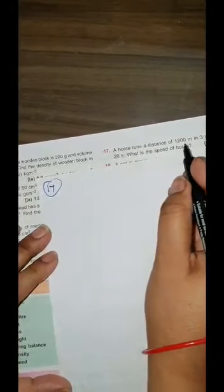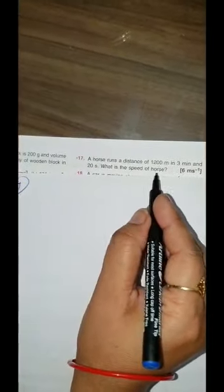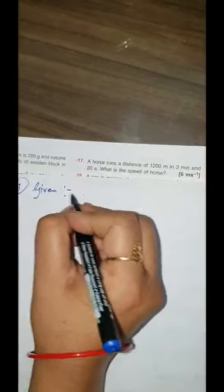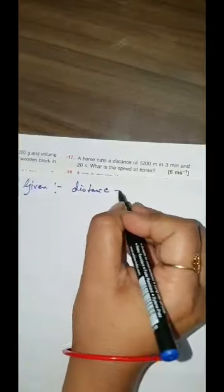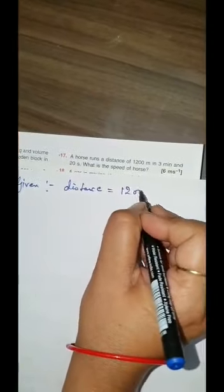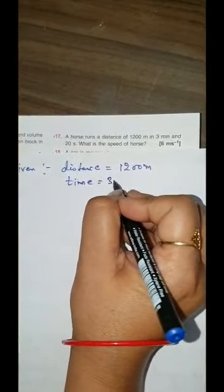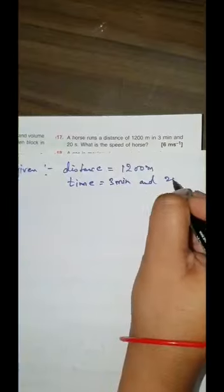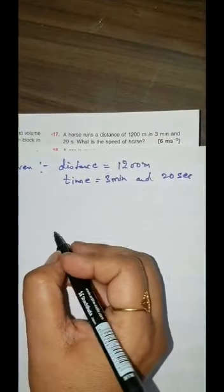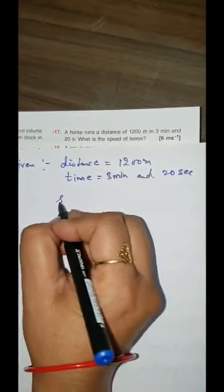Now coming to next numerical — that is numerical 17 of your book. A horse runs a distance of 1200 meter in 3 minutes and 20 seconds. What is the speed of the horse? Given: distance is equal to 1200 meter, time is 3 minutes and 20 seconds. What we have to find? We have to find speed.